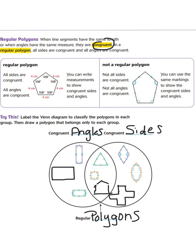All right, guys, that's it for today's lesson. Make sure that you have copied the vocabulary from today's lesson, including congruent and regular polygons, into your math journals, and bring it with you to class tomorrow because those are going to be very important as we go throughout this entire unit on geometry. Until then, I will see you tomorrow. Have a good evening.